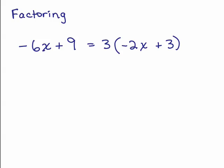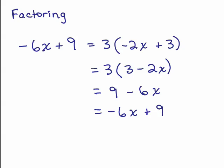Also notice that because of the commutative property, you could write -2x + 3 as 3 - 2x. Which, if you did the distributive property, you would get 9 - 6x, which of course you get right back to the original problem if you did the commutative property again, -6x + 9.